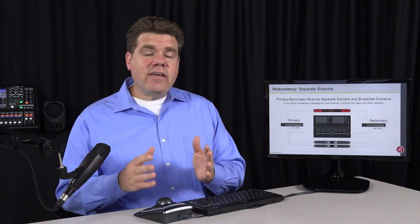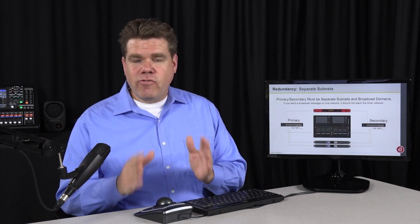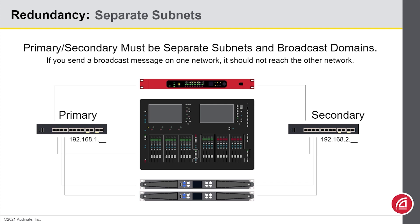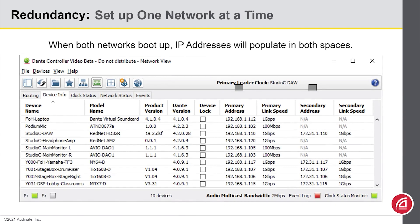So again, the key is to make sure that you keep these two networks completely isolated. One way to keep your sanity when you're commissioning a redundant setup is to start with one network at a time. Ordinarily, when we look in Dante Controller, we should see something like this. The primary addresses are listed in one column and the secondary addresses are listed in the other.